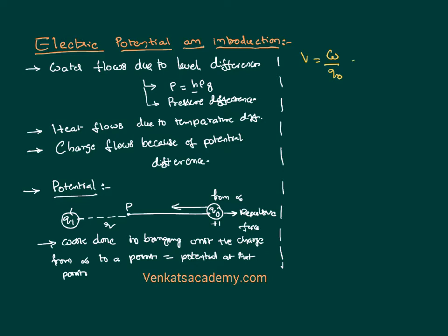That is the definition of potential. We know work done is measured with a unit called joule, and charge is measured with a unit called coulomb. So the unit of potential is joule per coulomb. In the name of a scientist, it is also called volt. If you are inclined to write a dimensional formula, work done is nothing but energy. Its dimensional formula is ML²T⁻², and for charge, since current is defined as rate of flow of charge — i = q/t, so q = it — it has a dimensional formula of IT. So the dimensional formula of potential is ML²T⁻³I⁻¹.